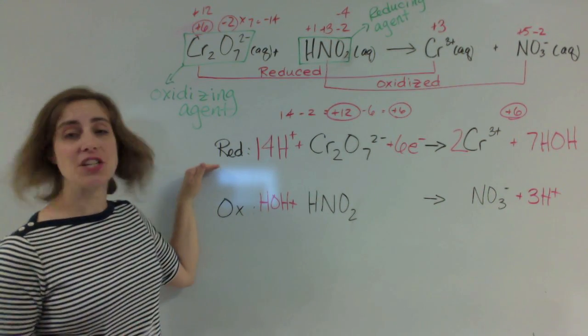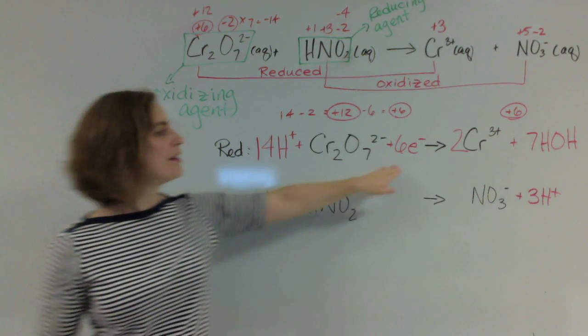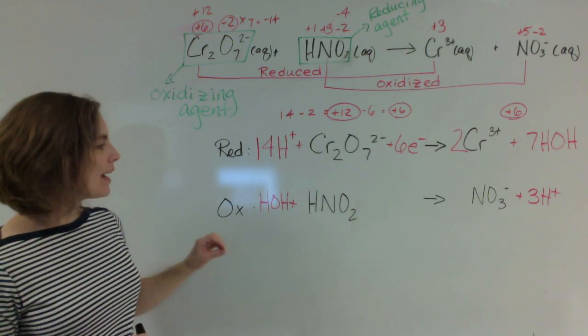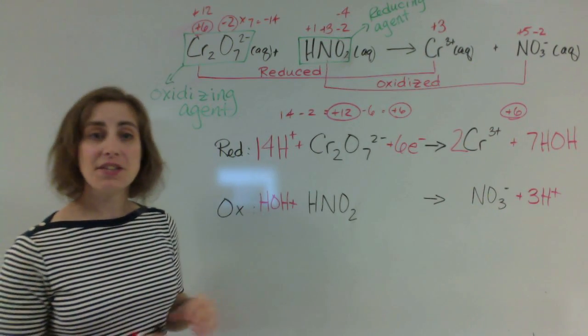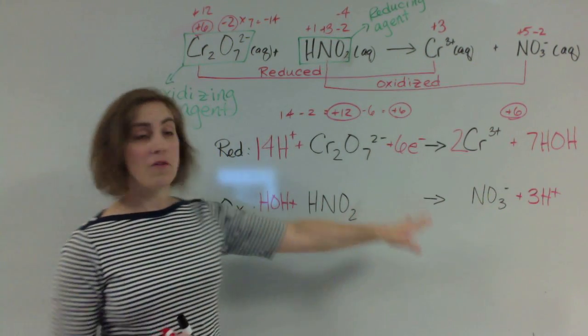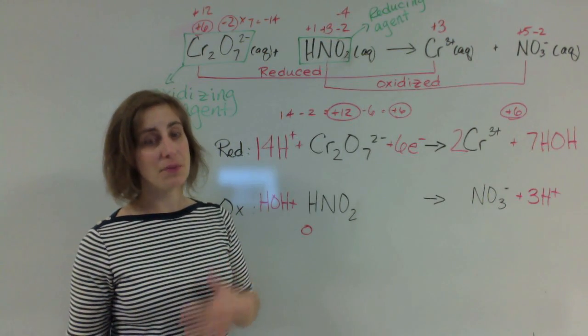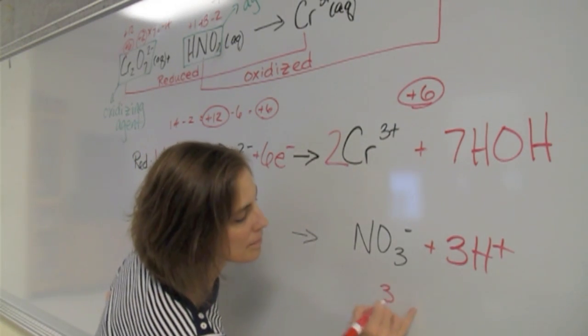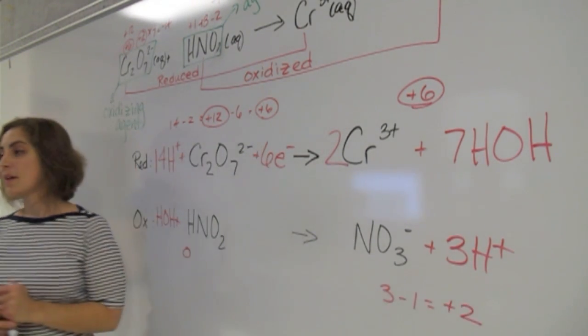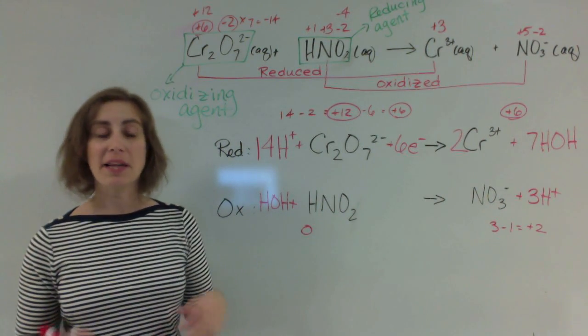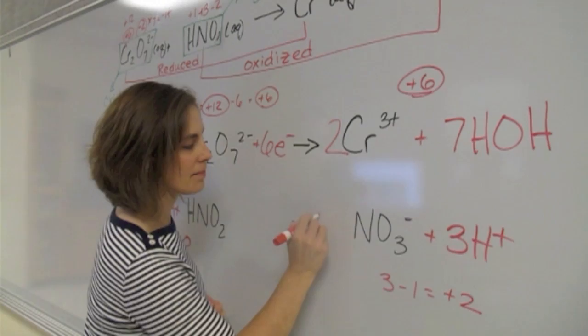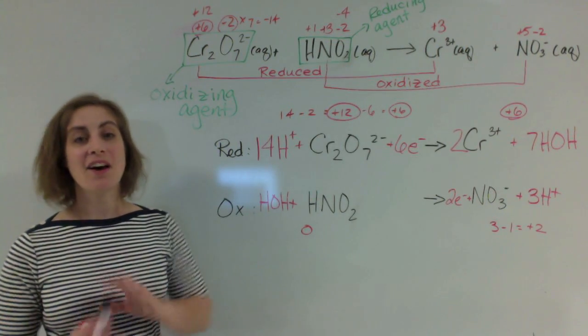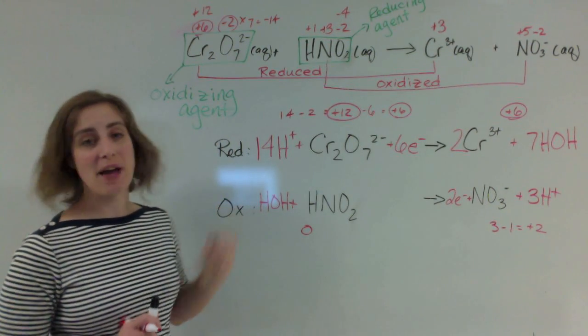Now, looking at oxidation, I see that over here, I have a net charge of 0. And over there, I have a negative 1 and positive 3, essentially, which means overall a charge of positive 2. To get that side to equal 0, I'm going to need to add 2 electrons. And there you have it. I balanced all my atoms and my charges for these 2 half reactions.